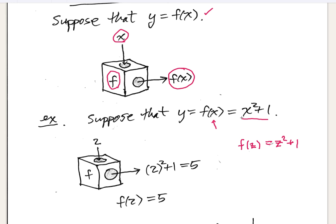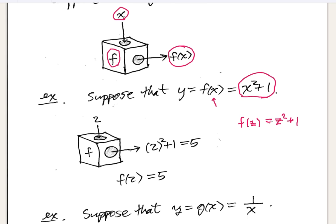This particular function, independent of the variable, takes whatever you put into it, squares it, and then adds 1 to the result. For example, if I was going to compute f of 2, I claim I get 5. 2 drops into the function, and what pumps out is the square of 2 plus 1, which is 5.